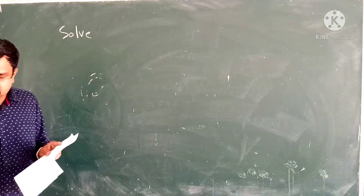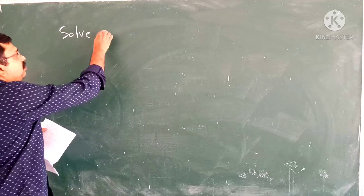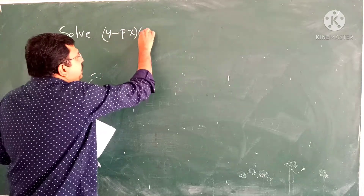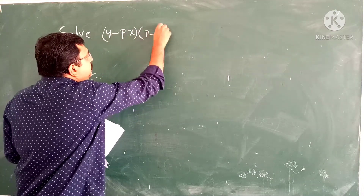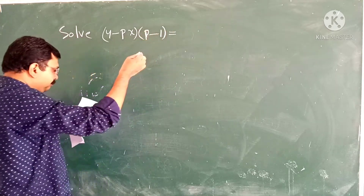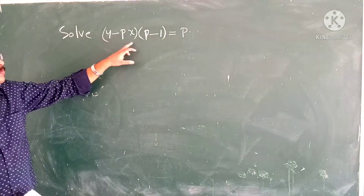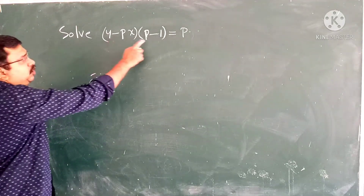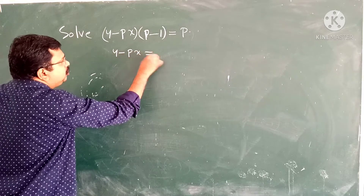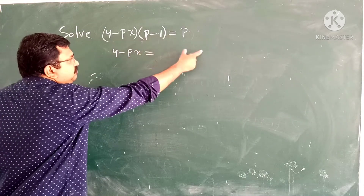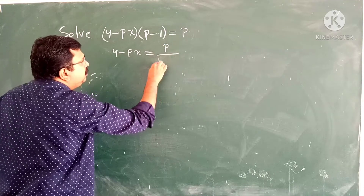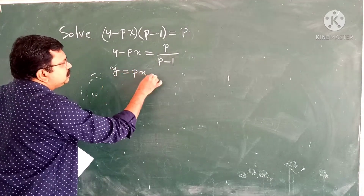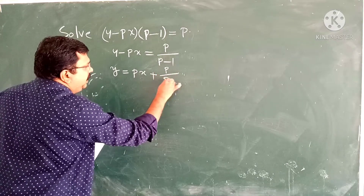Our next question is: solve y minus px into p minus 1 into p minus 1 equal to p. This equation can be written as y minus px equal to p by p minus 1. That is, y equal to px plus p by p minus 1.